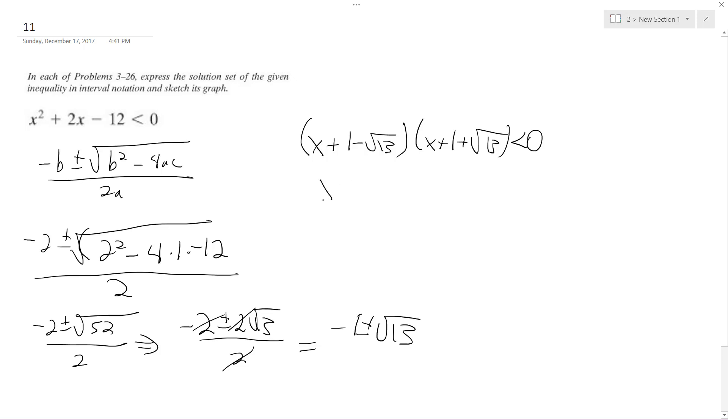So what this ends up being is x is either greater than negative square root of 13 minus 1 or x is less than square root of 13 minus 1.